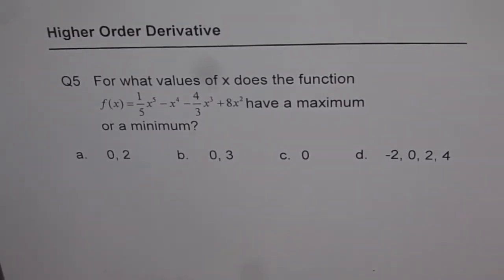Question number 5 on multiple choice higher order derivatives. For what value of x does the function f(x) = (1/5)x^5 - x^4 - (4/3)x^3 + 8x^2 have a maximum or a minimum value? We are given four choices: 0 and 2, 0 and 3, 0, or -2, 0, 2, and 4.